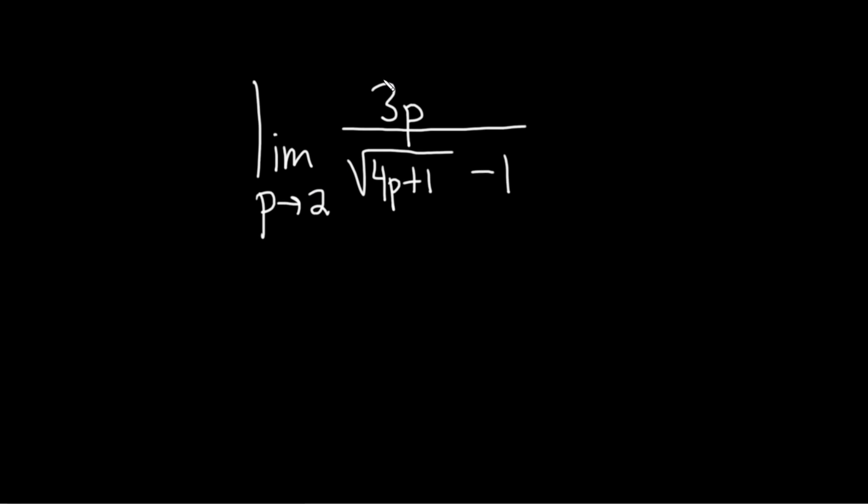Hi, in this video we're going to find the limit as p approaches 2 of 3p divided by the square root of 4p plus 1 minus 1. Let's go ahead and work through it very carefully.